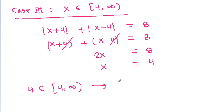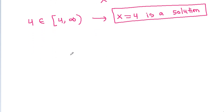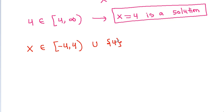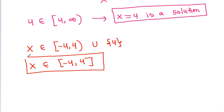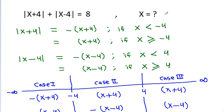Since x = 4 belongs to [4, ∞), x = 4 is a solution. So combining the results, the final solution is x belongs from closed -4 to closed 4, i.e., x ∈ [-4, 4].